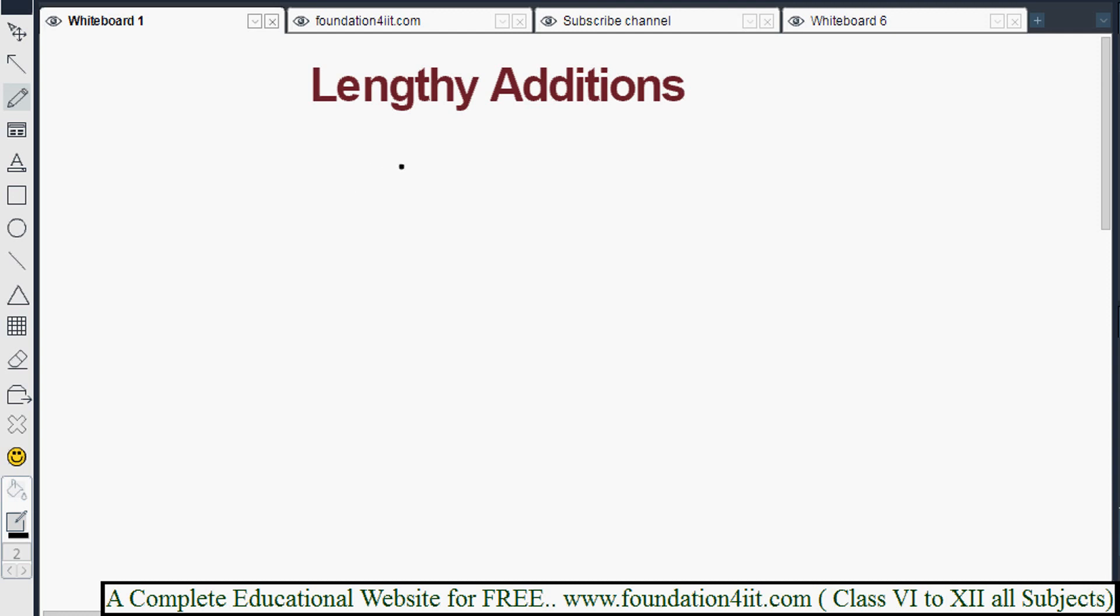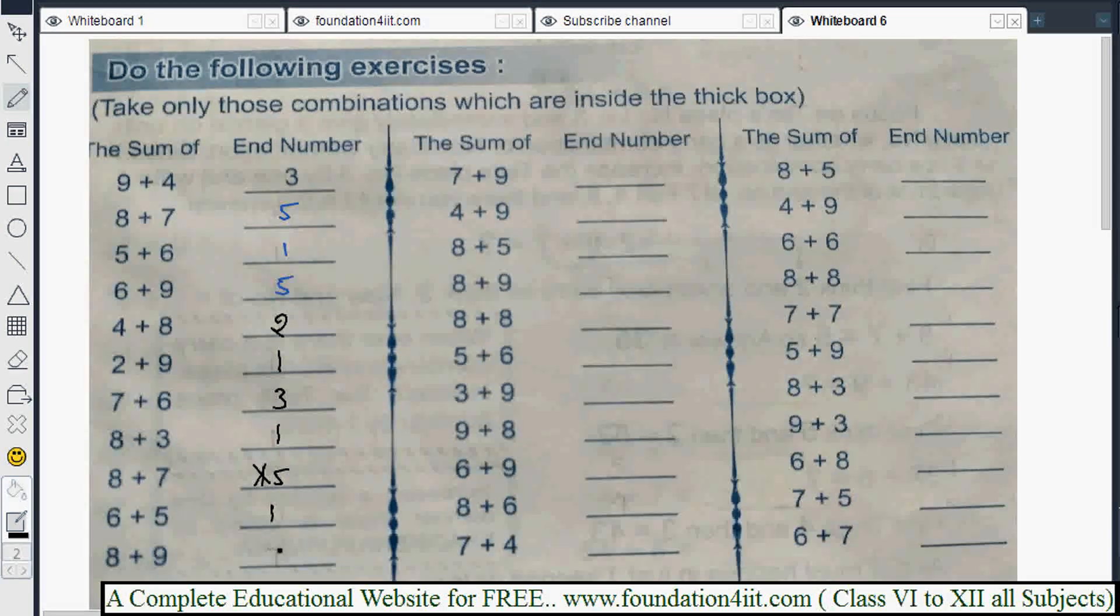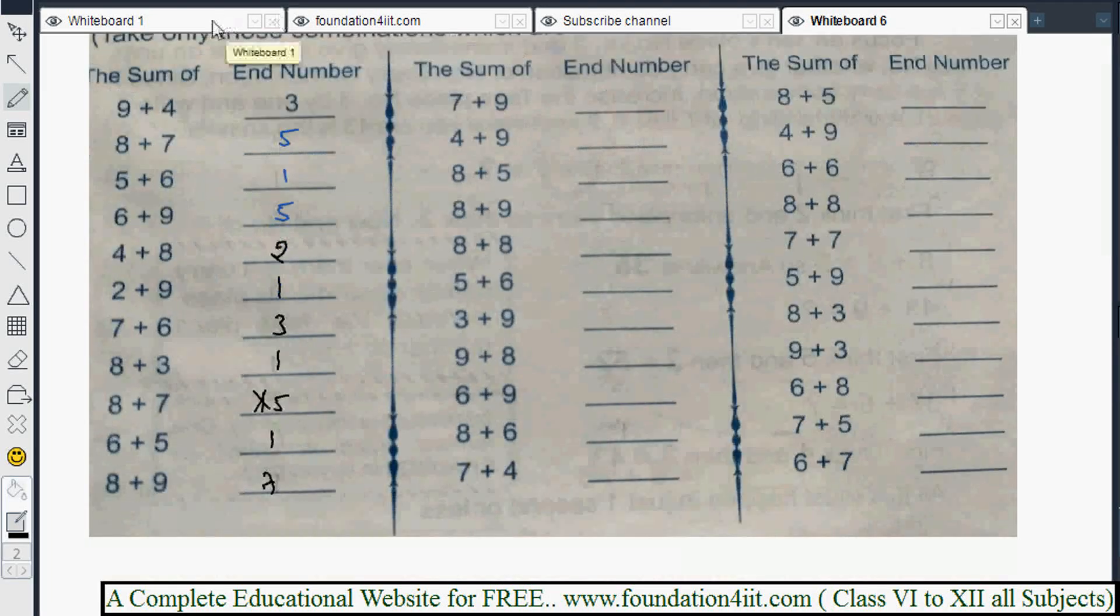Once again I'll show you here. 4 plus 8 is 2, 2 plus 9 is 1, 3. By seeing only where it is, we're able to write the n number. Only in the units place number we need to write. 8 plus 7 is 15, but we'll write only 5. Just we'll write only a number.